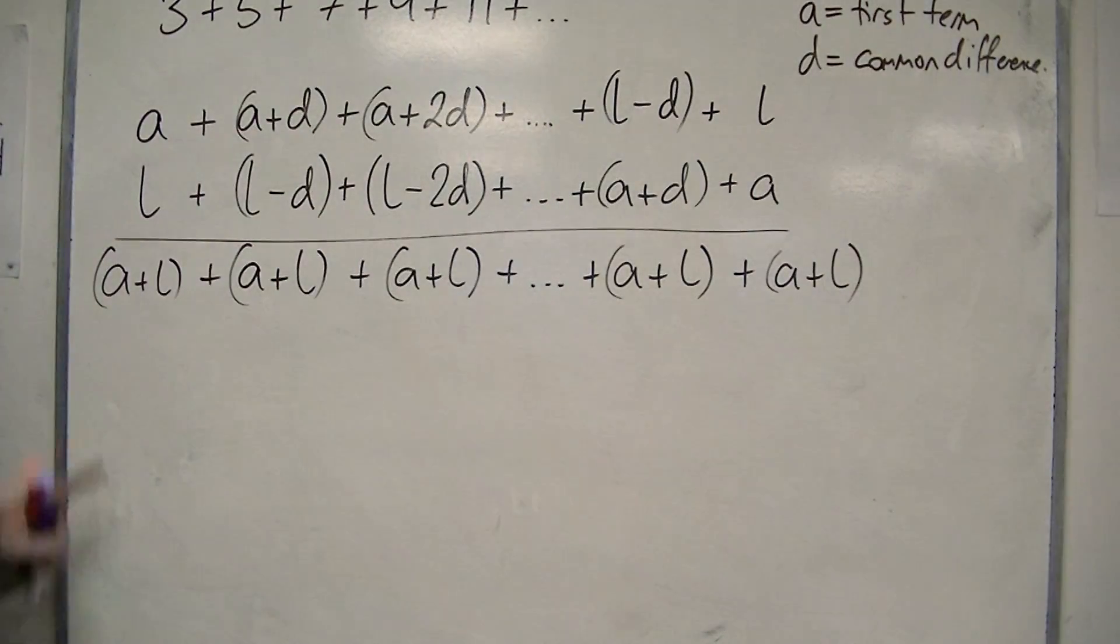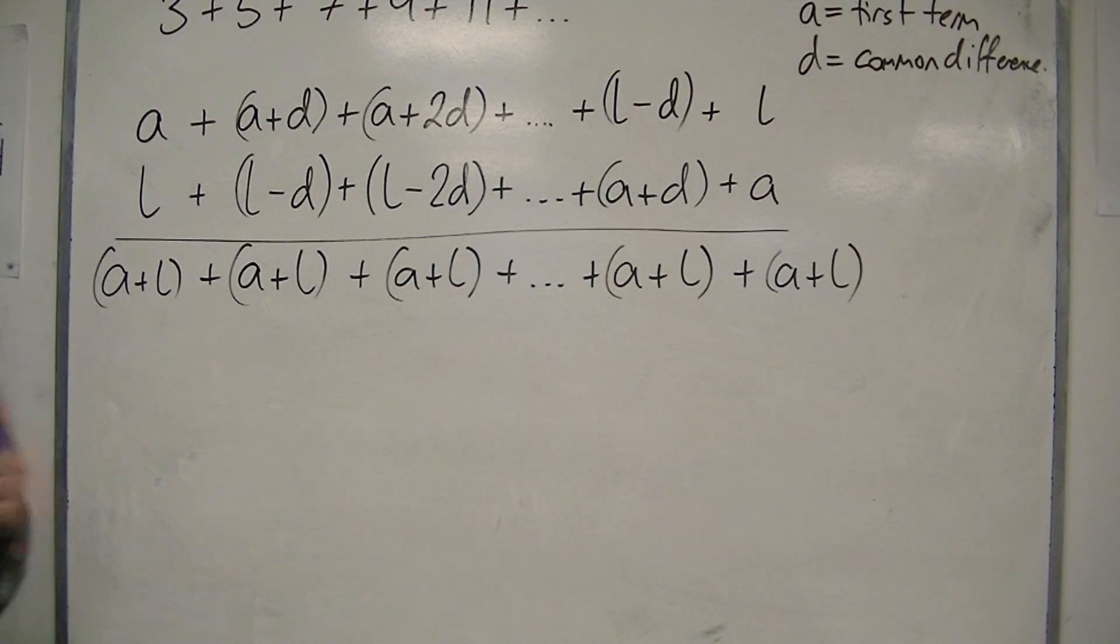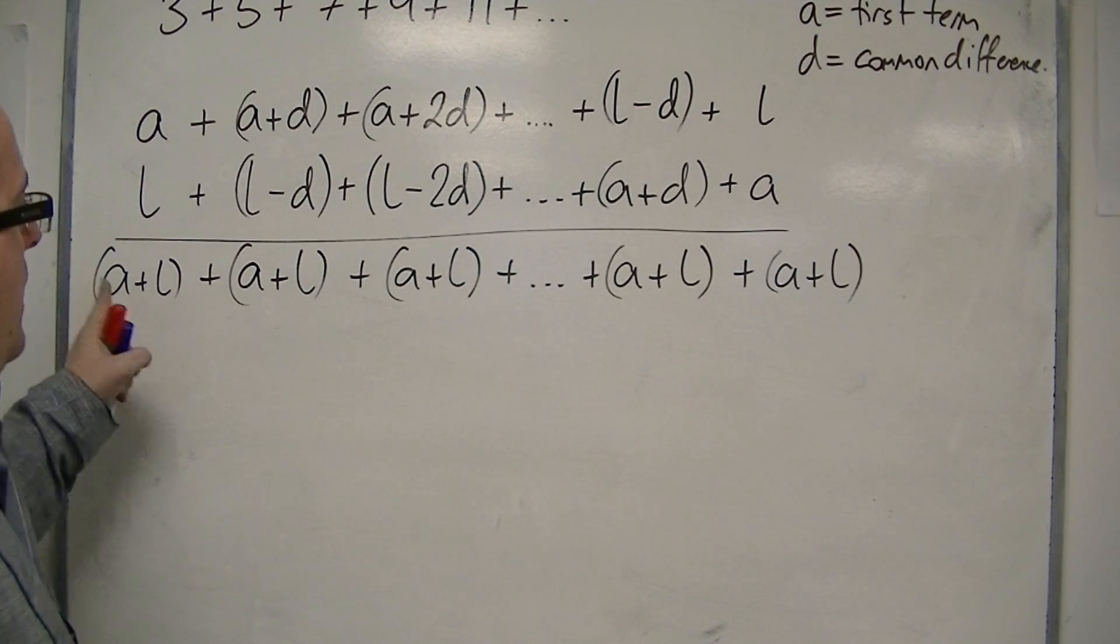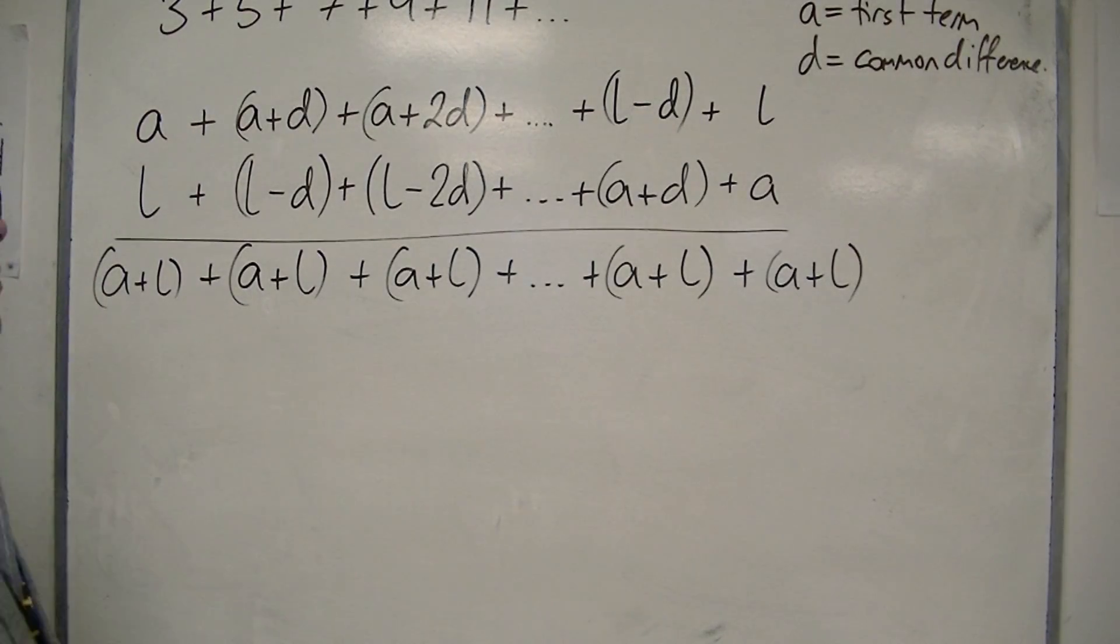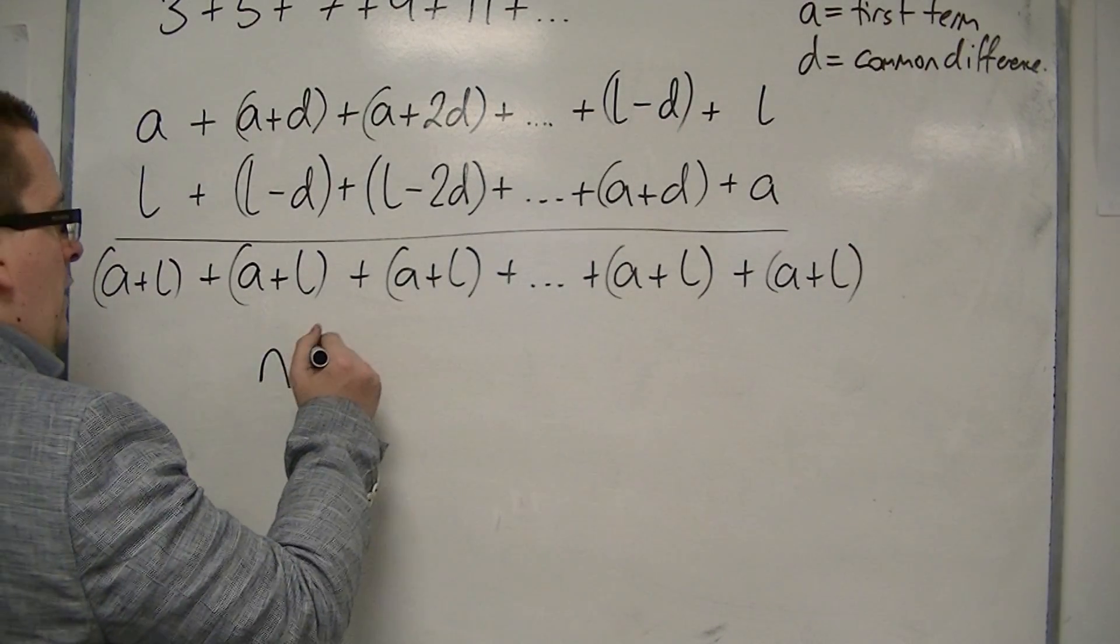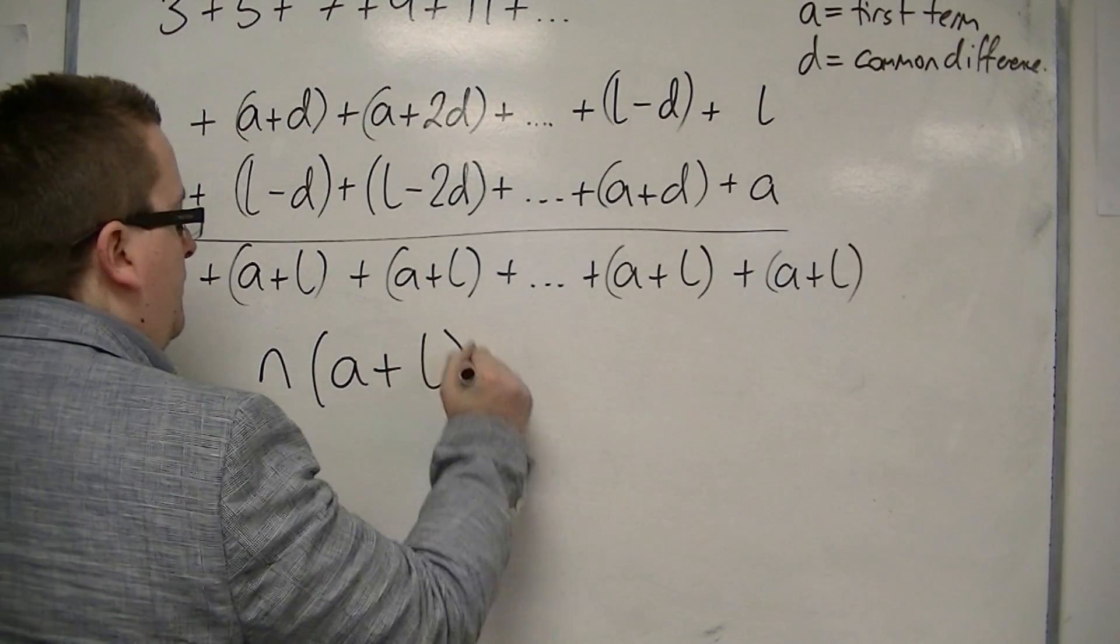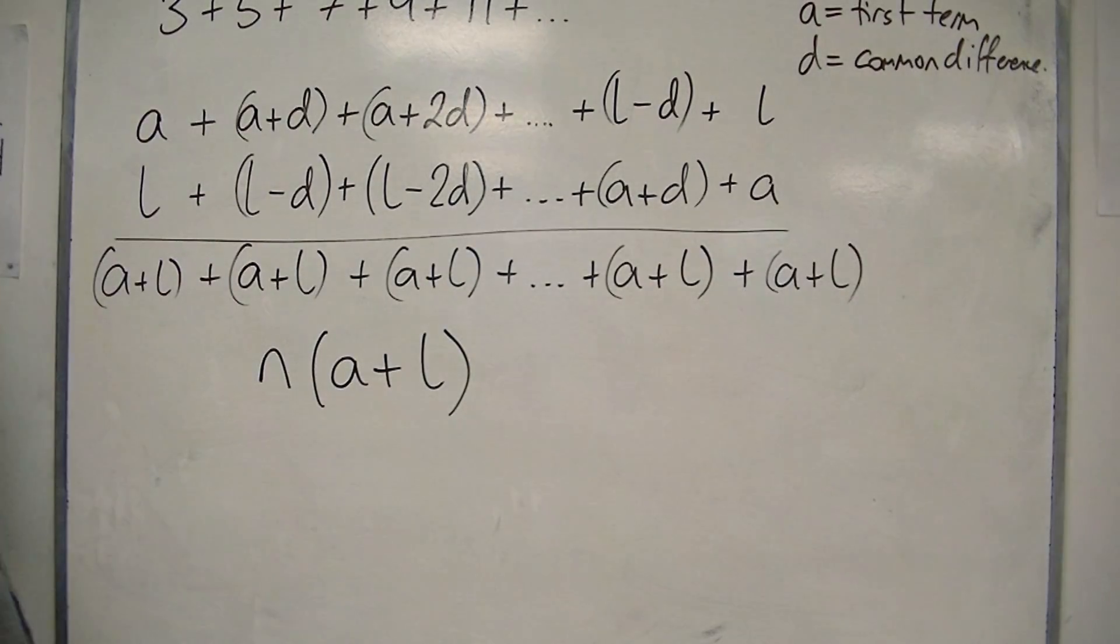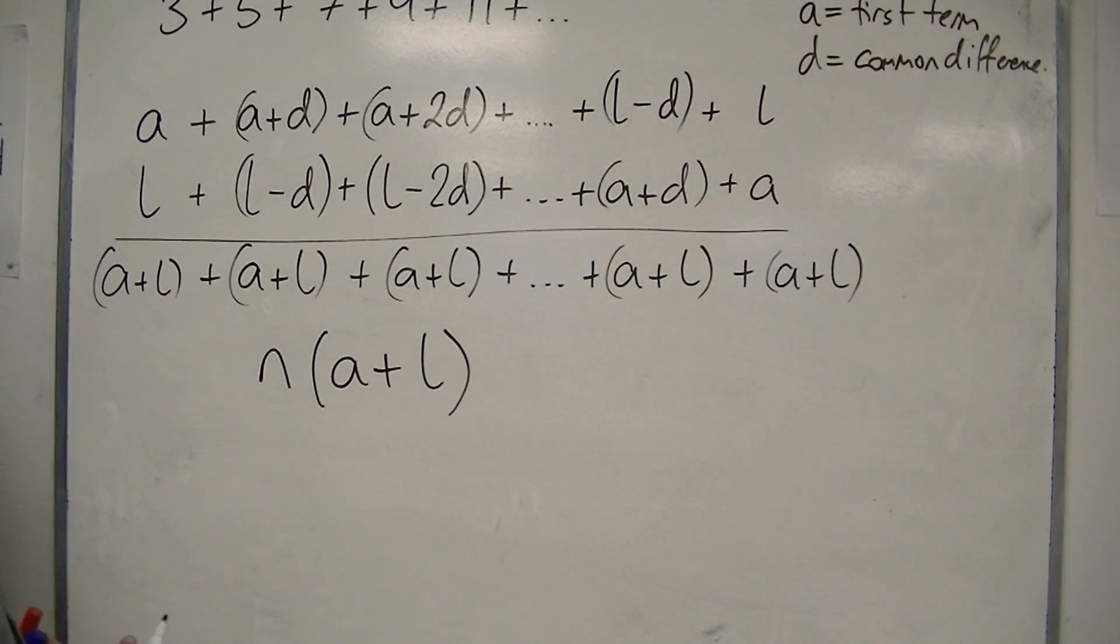So in actual fact, every single term is A plus L. So that means, well, how many have I got? I've got N lots of them. So N lots of A plus L is a very simplified way of adding all these together.